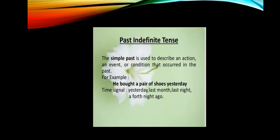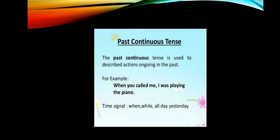Past indefinite or simple past tense is used to describe an action or event that occurred and was completed in the past. Time signal keywords include 'yesterday,' 'last month,' 'last night,' and 'a fortnight.' Past continuous tense is used to describe actions that were going on in the past until another action began — for example, 'When you called me, I was playing the piano.'